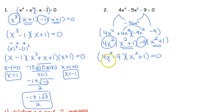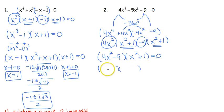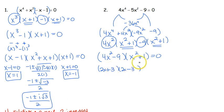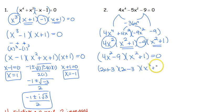We look at our first piece and we ask ourselves, can we factor any further? 4x squared minus 9 — yes, we can. That is the difference of two squares. So we know it's going to break down into two pieces: one's a plus, one's a minus. The square root of 4x squared is 2x, so that's the first piece. Square root of 9 is 3, that's our second piece. For x squared plus 1 — it's a quadratic, it's not the sum of cubes, and it's not the difference of two squares because we've got addition. So that is going to be our completely factored form.